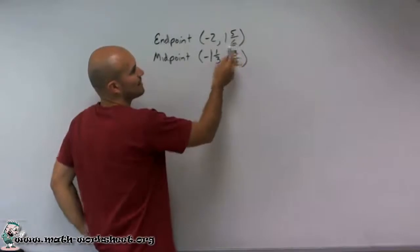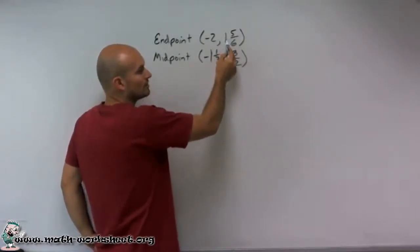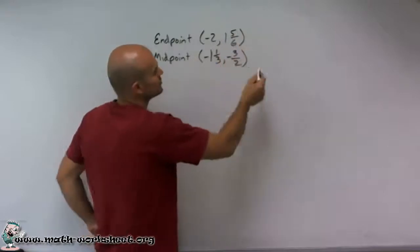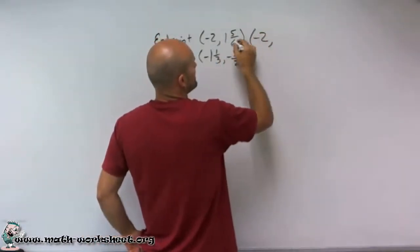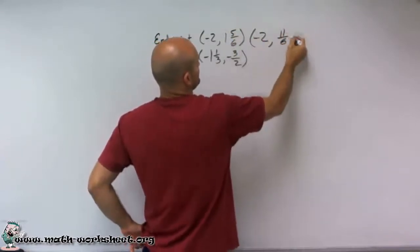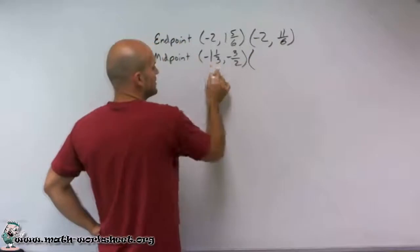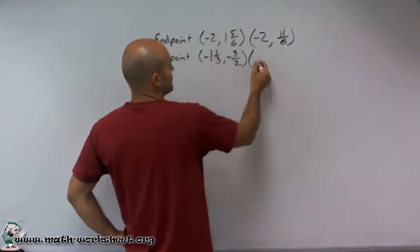To convert to improper fractions, you take your denominator, multiply it by your whole number, and then add the numerator. So this point I can rewrite as negative 2, 6 times 1 is 6 plus 5 is 11 over 6. This point I can write as negative 3 times 1, which is 3, plus 1 is 4 over 3.